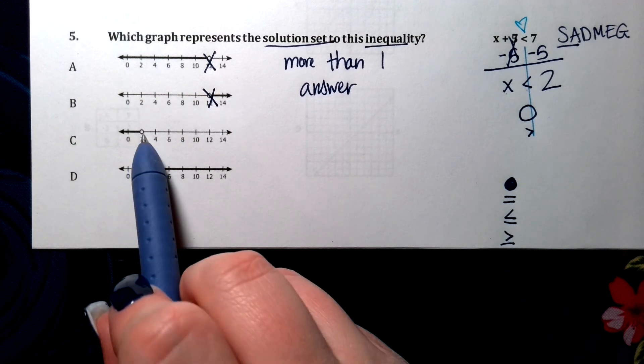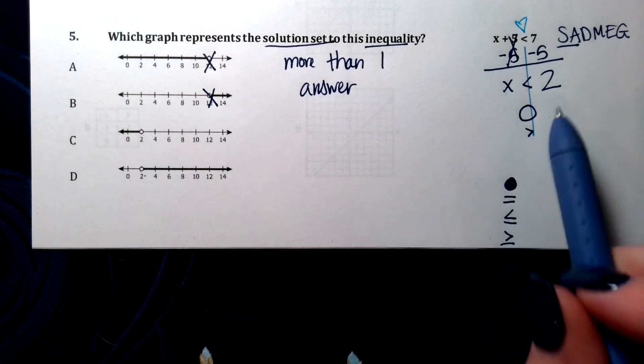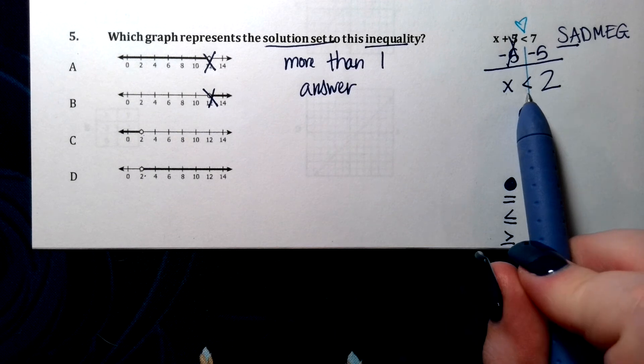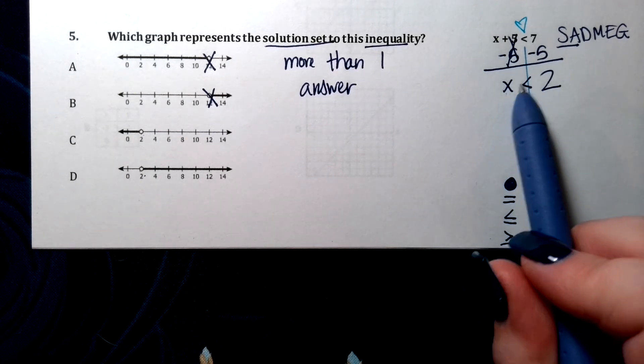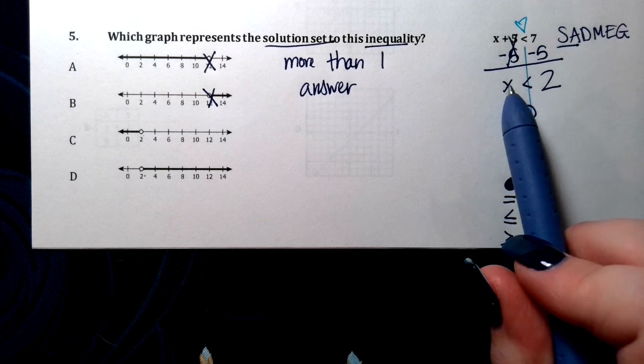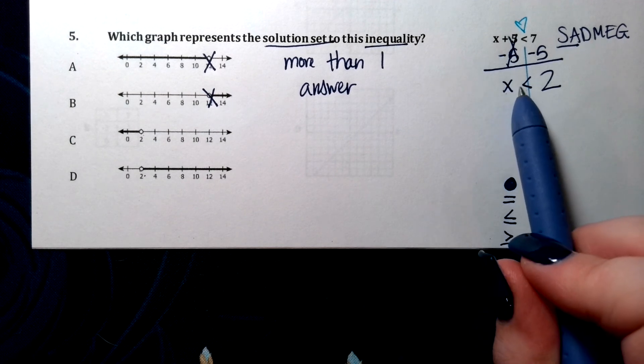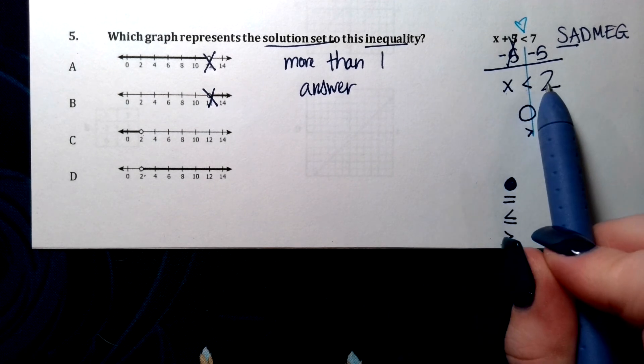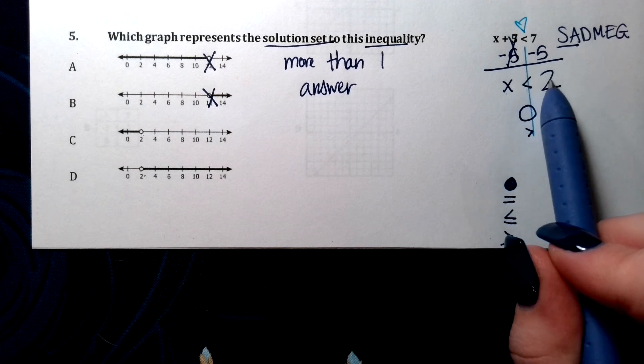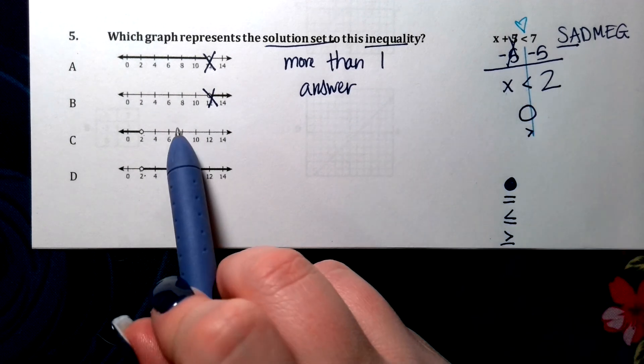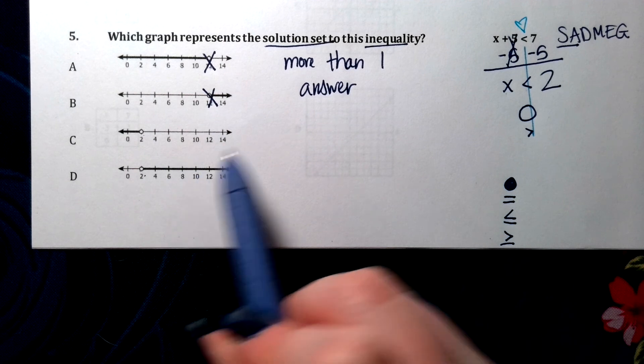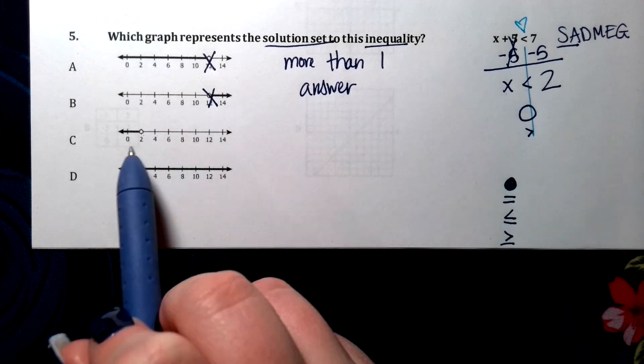So that narrows it down to C and D. This is important that you know how you say this sign. x is less than 2. All these numbers for x need to be smaller than 2. Because remember, it opens to the bigger side. So which of these two shows answers that are less than or smaller than 2?